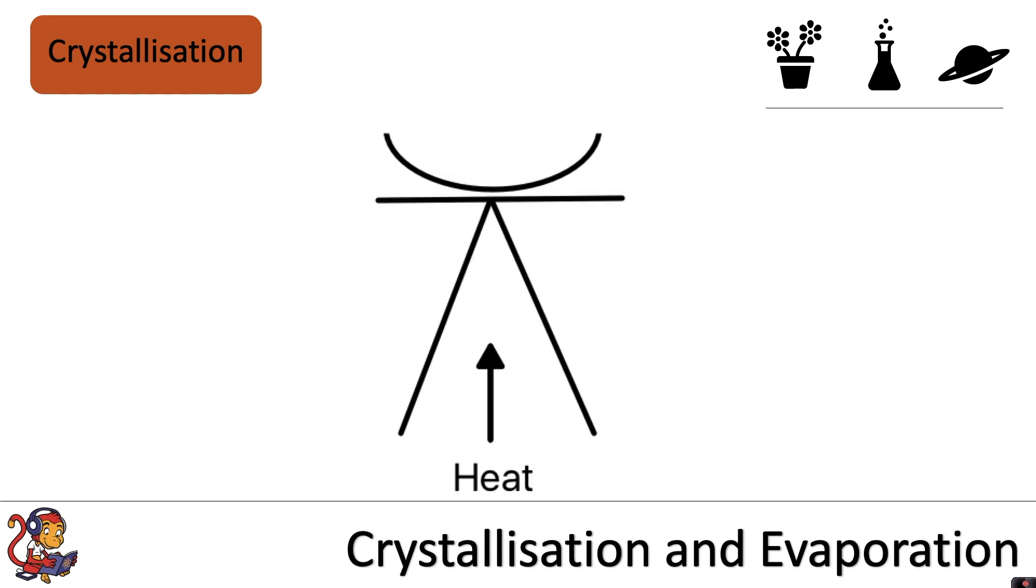This diagram shows the equipment that you will need to do crystallization in the lab. You will need a source of heat, for example a Bunsen burner, a tripod, a gauze, and an evaporating dish.